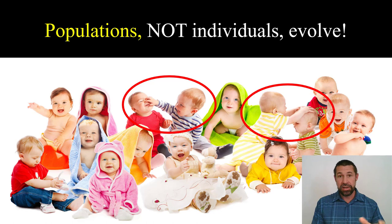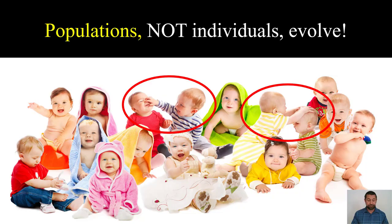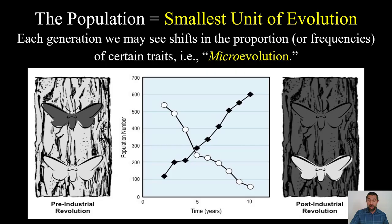Natural selection acts on individuals, allowing some with their beneficial traits to better survive and have greater reproductive success. And then in the next generation the population evolves in the sense that those beneficial traits become more common. Thus, the population represents the smallest unit when we're talking about evolution.